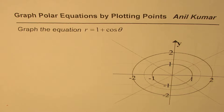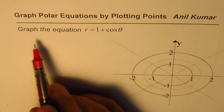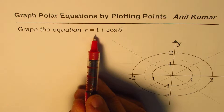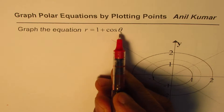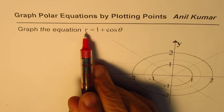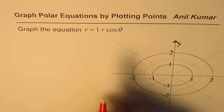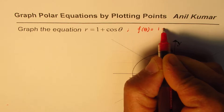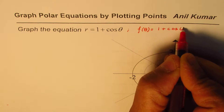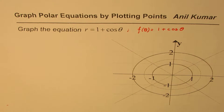I'm Anil Kumar and in this video we'll discuss how to graph polar equations by plotting points. The question here is: graph the equation r equals 1 plus cos theta. To graph the equation we need some points for theta and the corresponding points for r. Here r is a function of theta — I could write this as f of theta equals 1 plus cos theta. It is good to write it in function form since we can do many operations and explain them better.